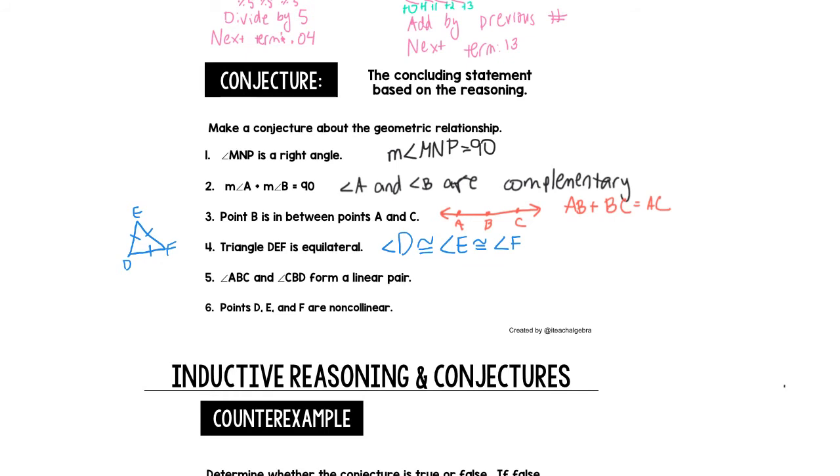Next, angle ABC and angle CBD form a linear pair. Let's draw a picture. Pictures really help me with geometry a lot. So we've got angle ABC and angle CBD make a linear pair. Well, we learned a word that describes this relationship. That means the conjecture is angle ABC and angle CBD are supplementary because they equal 180 degrees. They form a line with two of their rays pointing in the opposite direction.